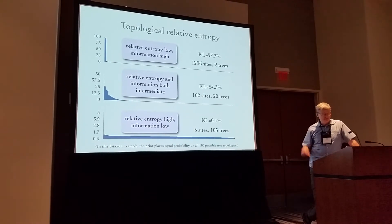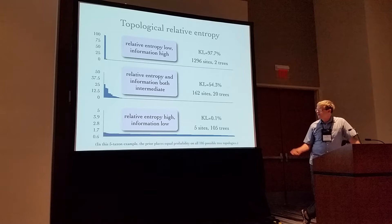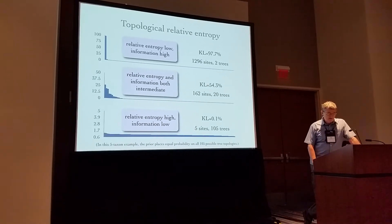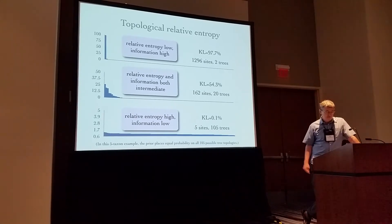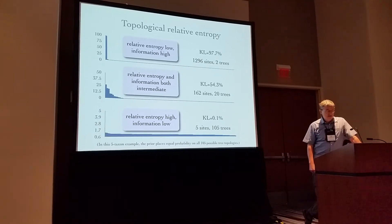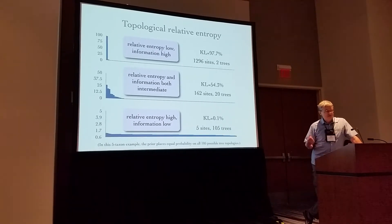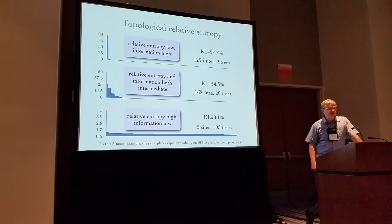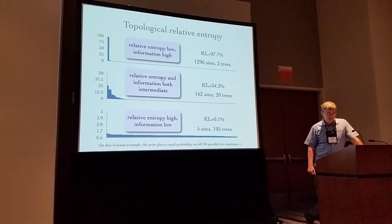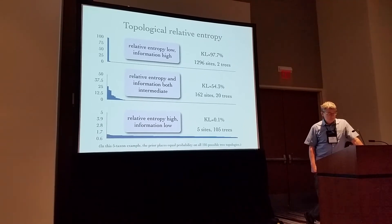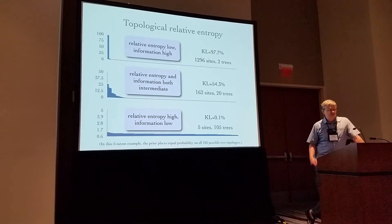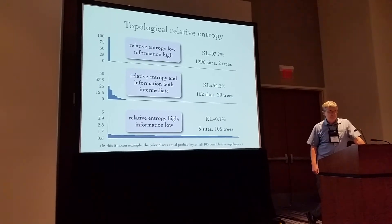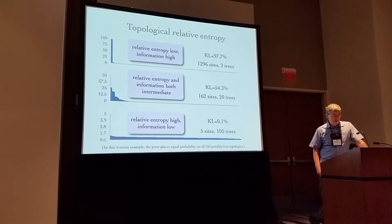This five-taxon example using all 1,296 sites from one gene provides nearly 98% of the maximum possible information content — we're down to just two trees, and one is heavily favored over the other. Using data from only five sites results in a posterior very similar to the non-informative prior, spread evenly over 105 trees, giving only 0.1% of the maximum possible information content. Surprisingly, including only 12.5% of the sites yields more than 50% of the information, showing that information does not grow linearly with the amount of data — there are diminishing returns on your data investment.